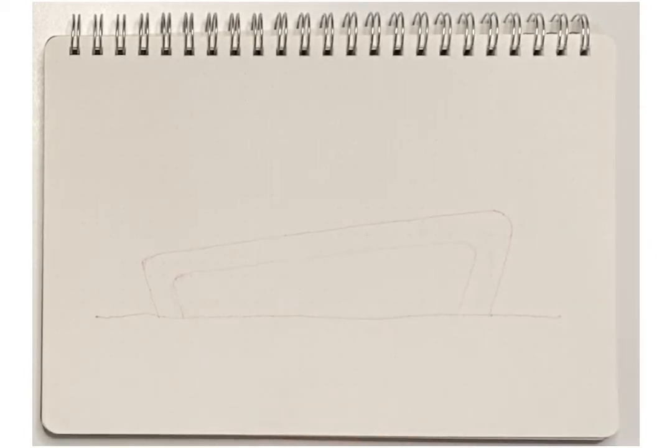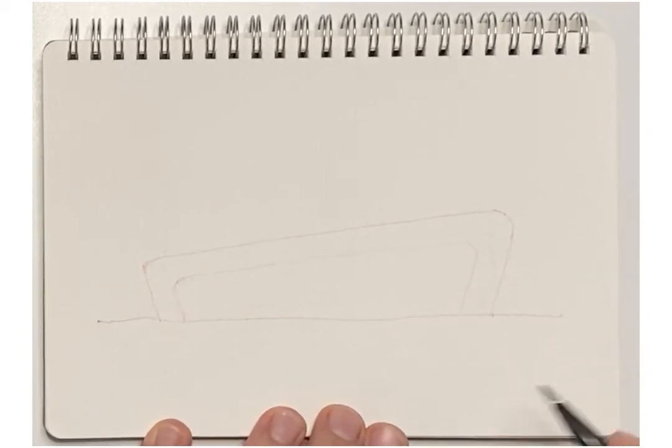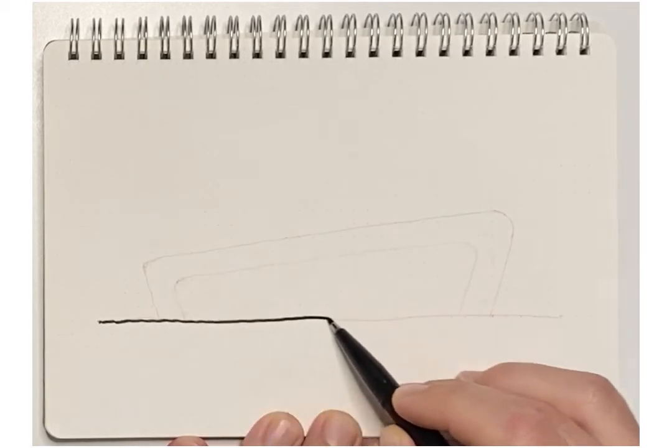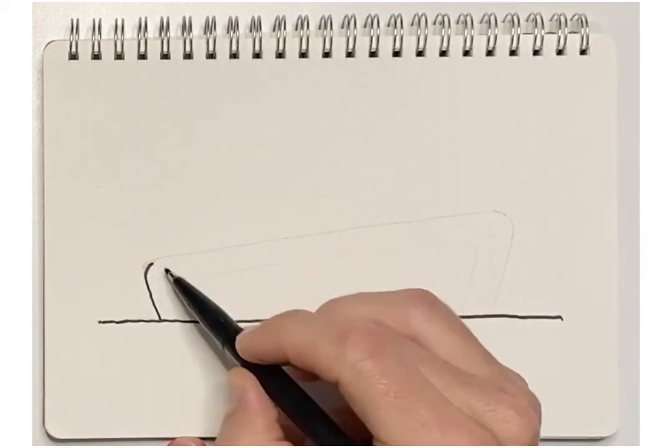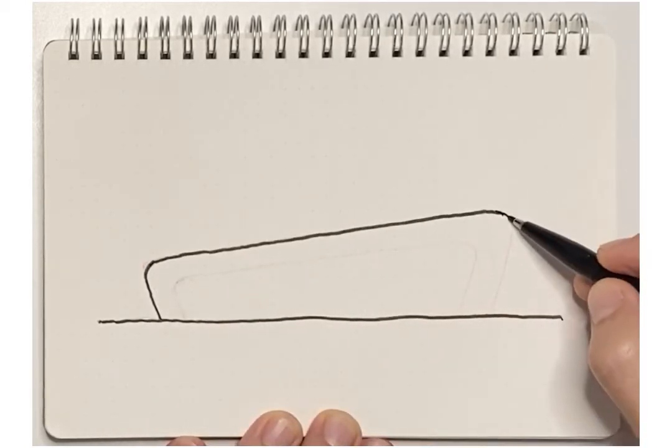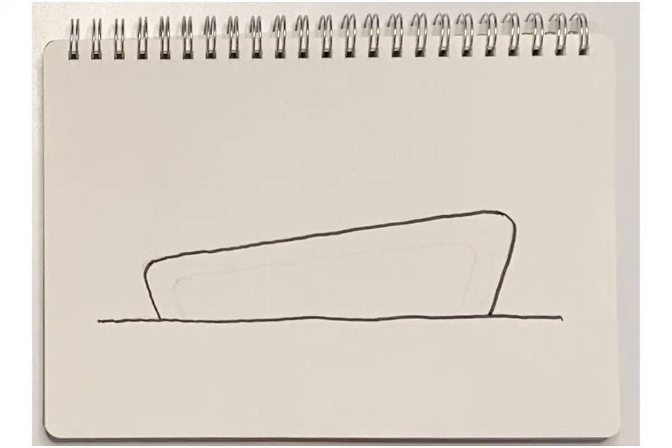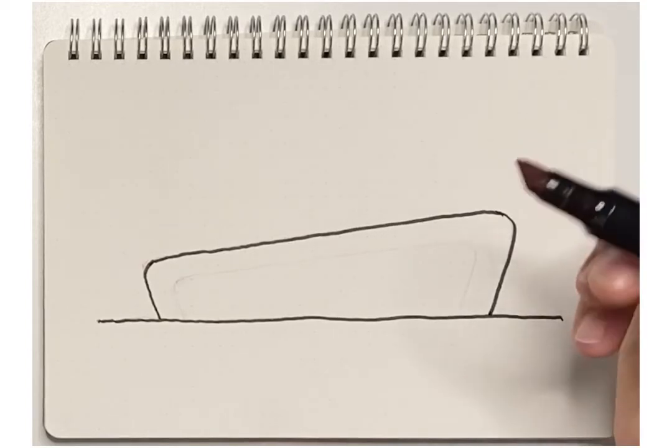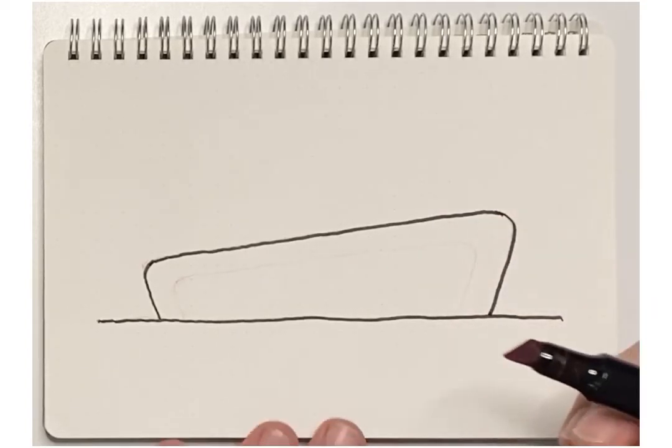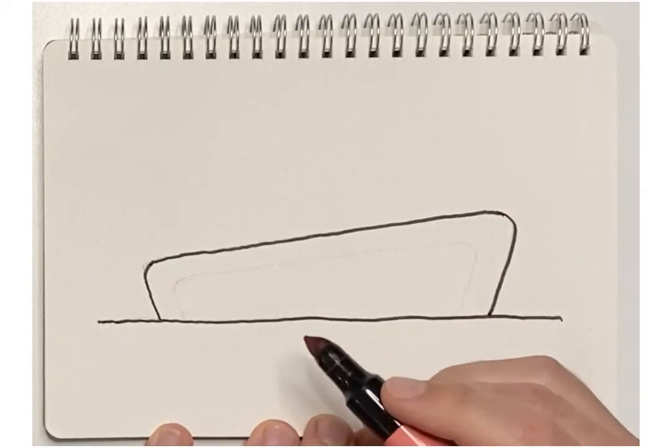Next what we will do is we will use our black pen to go over these lines. We will not outline the edges of the red volume yet. Next we'll get our red pen, red marker and we will fill in the space for the red volume.